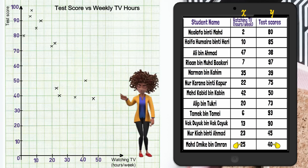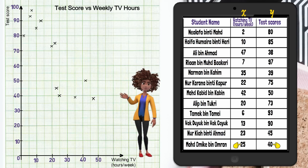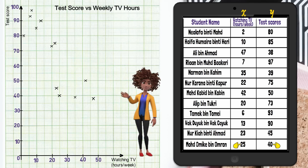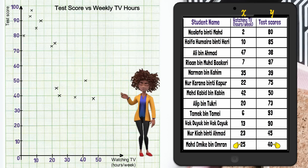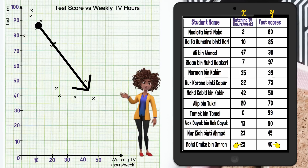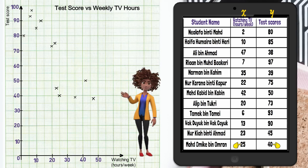Another important component of a scatterplot is the form of the relationship between the two variables. This example compares students' test scores and their time spent watching television. These two variables have a negative correlation because, in general, as the number of hours spent watching television increases, the test scores tend to decrease.